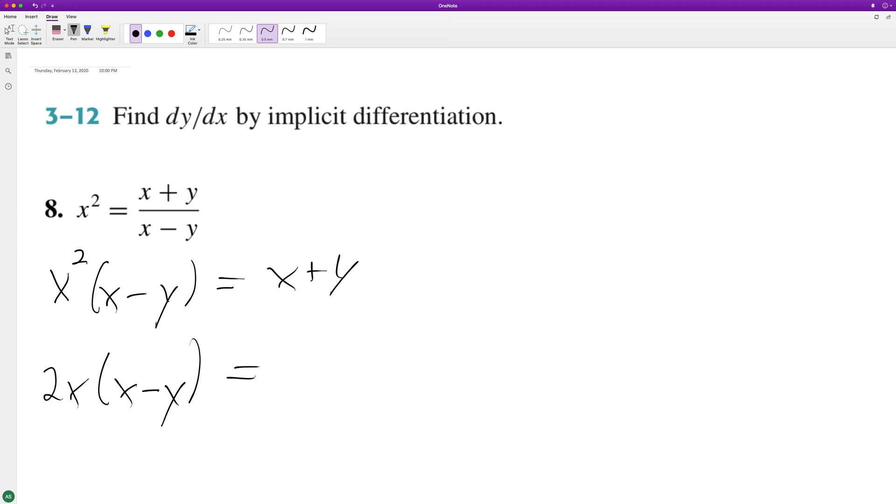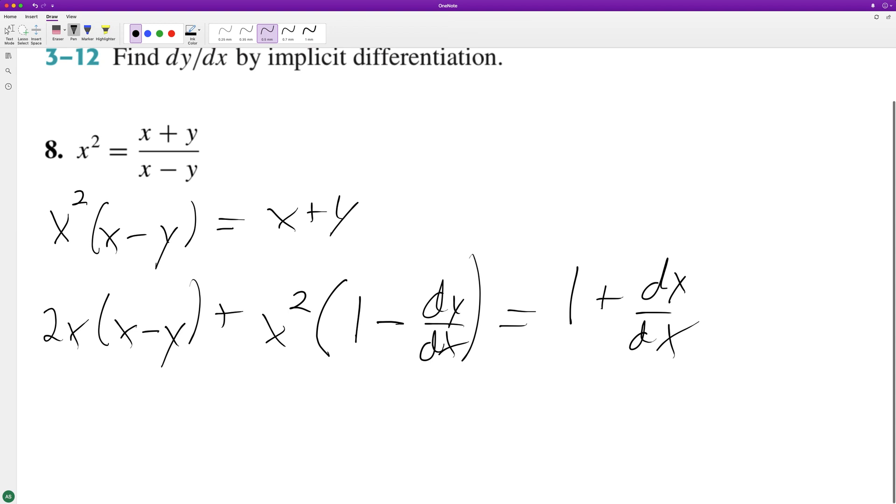Oh, excuse me, that's not right. Plus x squared times 1 minus dy/dx is equal to 1 plus dy/dx. Get all the dy/dx on one side. All right, so hold on a second here.